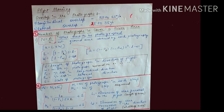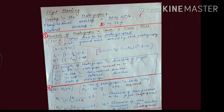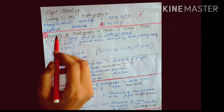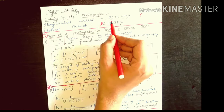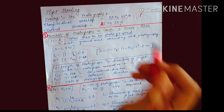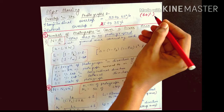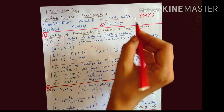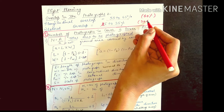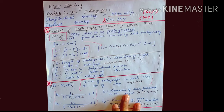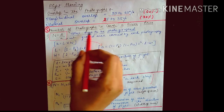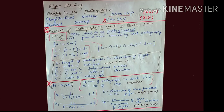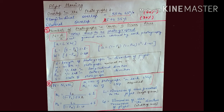Now let us look at flight planning formulas in detail. The first formula covers overlapping ranges as discussed. The second formula is for the number of photographs to cover a given area. The basic formula is n = A / a, where A is the total area to be photographed and a is the net ground area covered by each photograph.